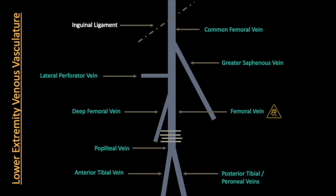More proximally in the leg, as we trace the venous tree upstream, we will eventually reach the popliteal vein, itself formed by a confluence of the anterior tibial, posterior tibial, and peroneal veins as either a two- or three-vessel conjunction.